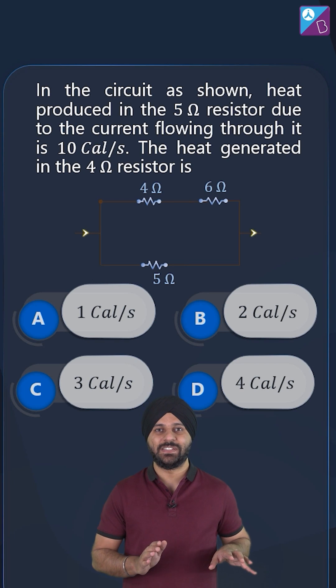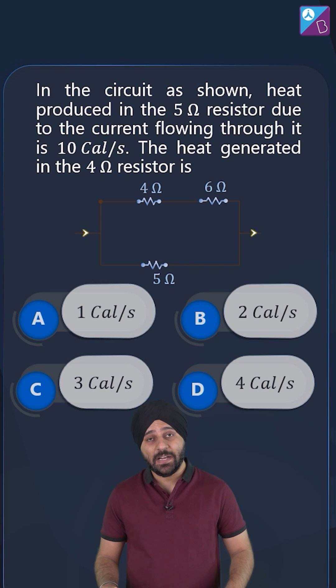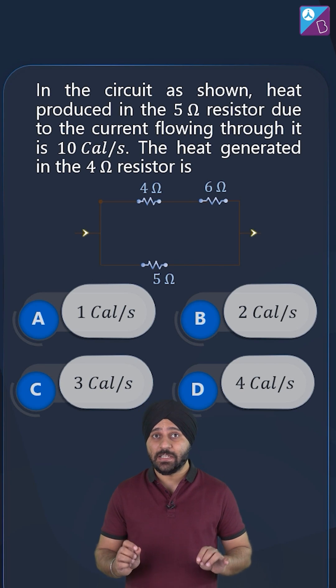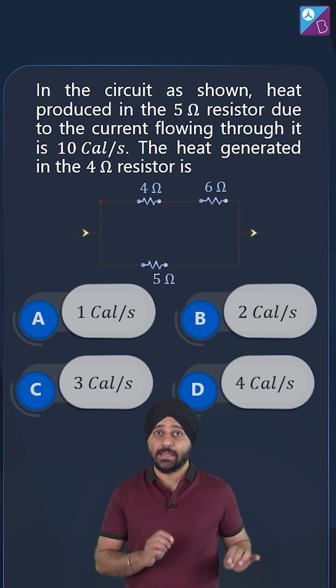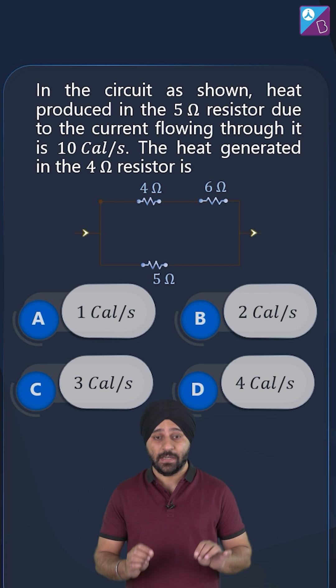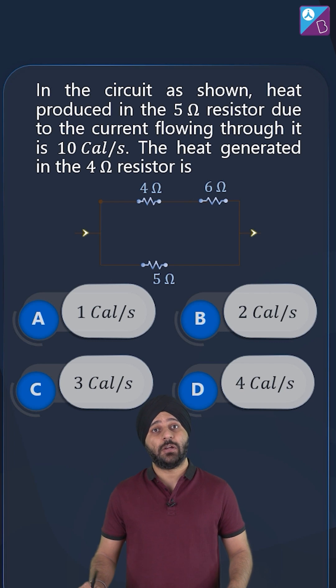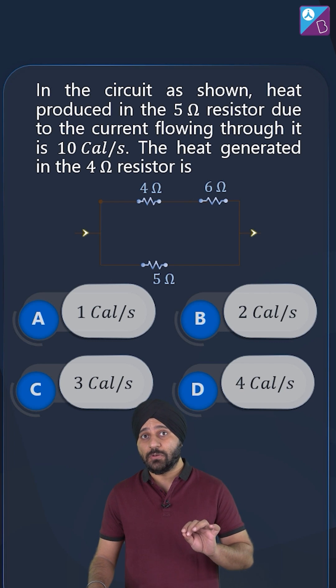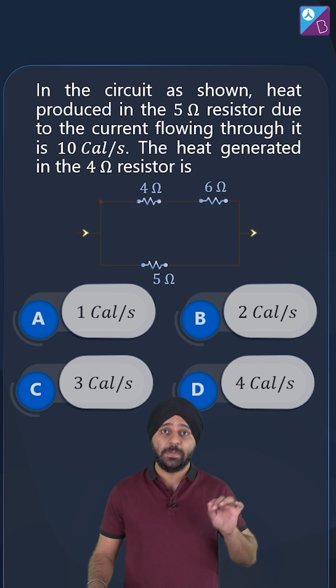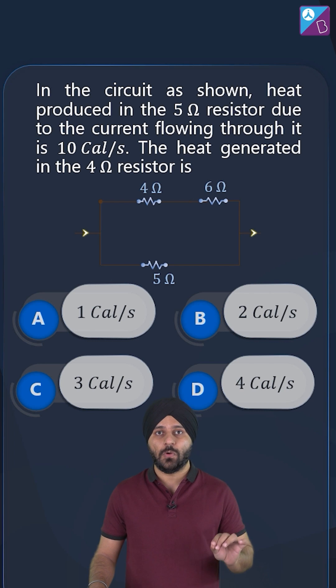In the given circuit, it is provided that heat is flowing at 10 calories per second through the 5 ohm resistor. The question asks what will be the heat that flows through the 4 ohm resistor.